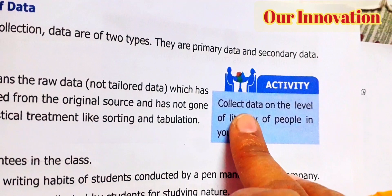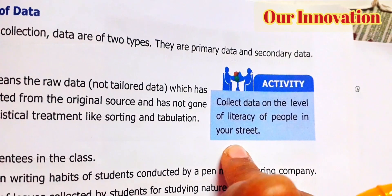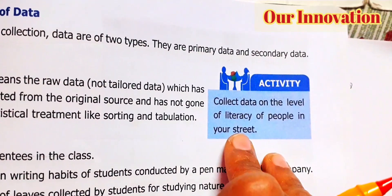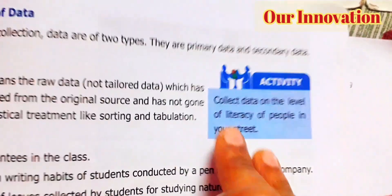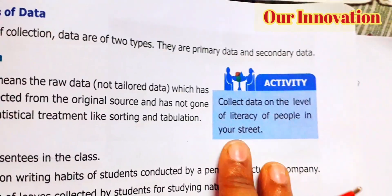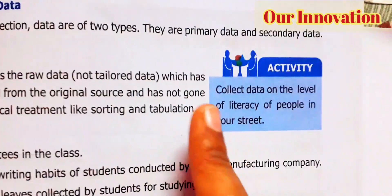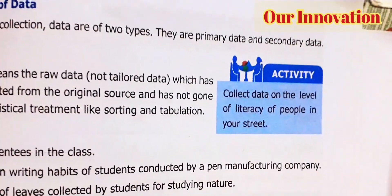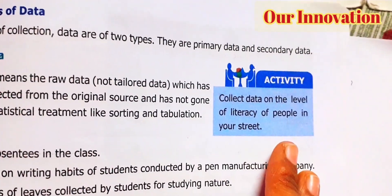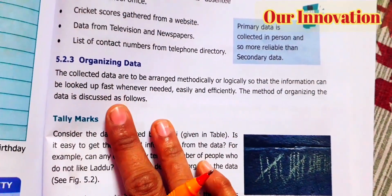For example, if you collect data on the level of literacy of people in your street, that is primary data — because you are the one collecting it first-hand. Suppose you need to collect secondary data — you would use already collected data and recollect it.